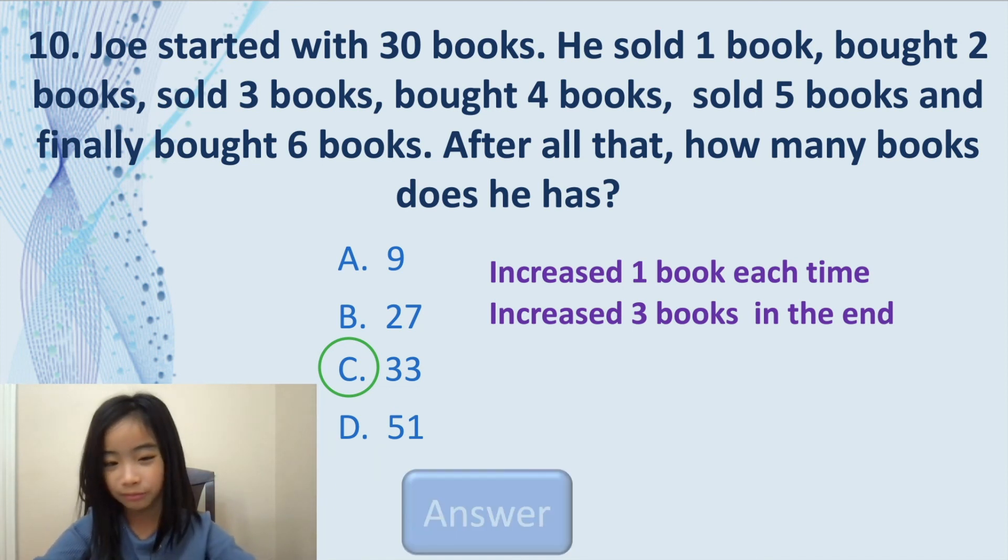We move on to the tenth question with a different pen. The tenth question is, Joe started with 30 books. He sold one book, bought two books, sold three books, bought four books, sold five books, and finally bought six books. After all that, how many books does he have? We know that it's increased one book each time. Increased means add one book each time. So we know that it increased three books in the end. So it's 30 plus three equals 33. We circle C. We press the answer button with this wonderful pen, and we are correct.